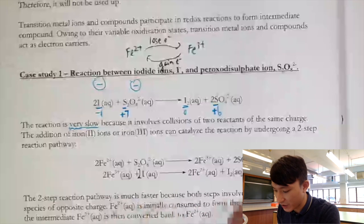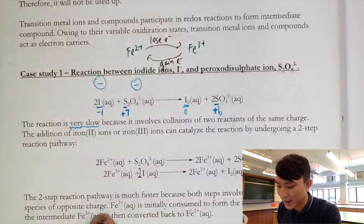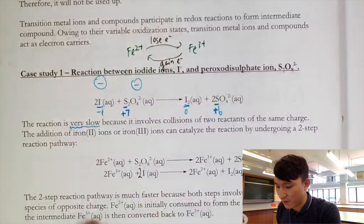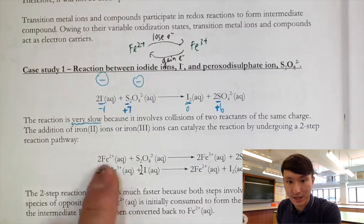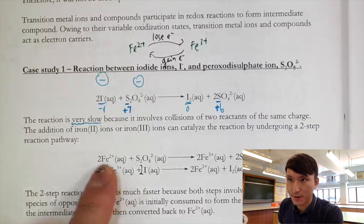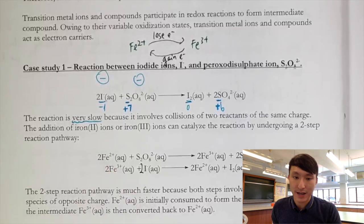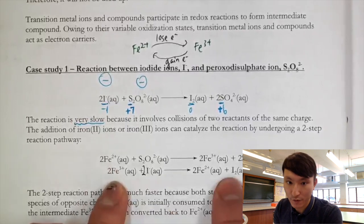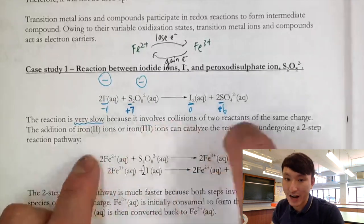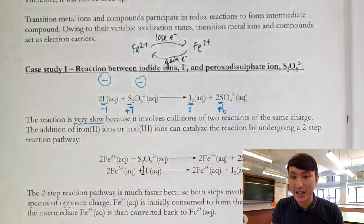You can also add Fe³⁺ at the start instead — it would undergo step 2 first and then step 1, accomplishing the same result. The two-step mechanism is faster than the direct one-step reaction because both steps involve a positive ion colliding with a negative ion, which is much more favorable than two like-charged ions colliding.